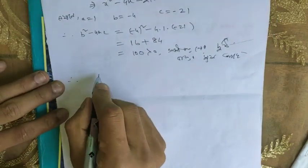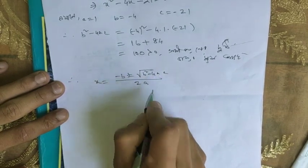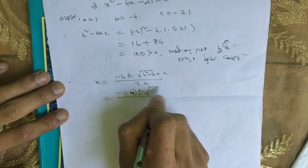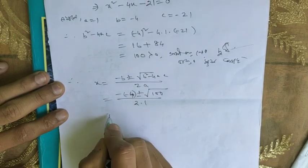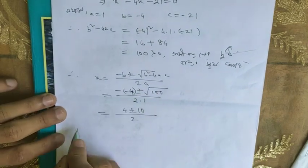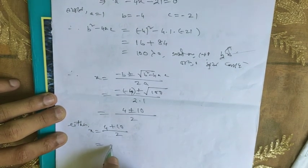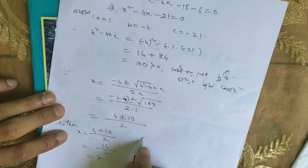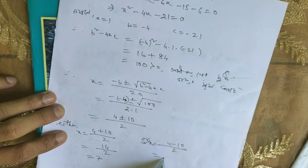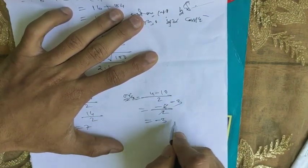So x is equal to minus b plus or minus root over b squared minus 4ac, divided by 2a. Substituting: minus minus 4, plus or minus root of 100, divided by 2 into 1. Root of 100 is 10, so either x equals (4 plus 10) by 2 equals 14 by 2 equals 7, or x equals (4 minus 10) by 2 equals minus 6 by 2 equals minus 3.